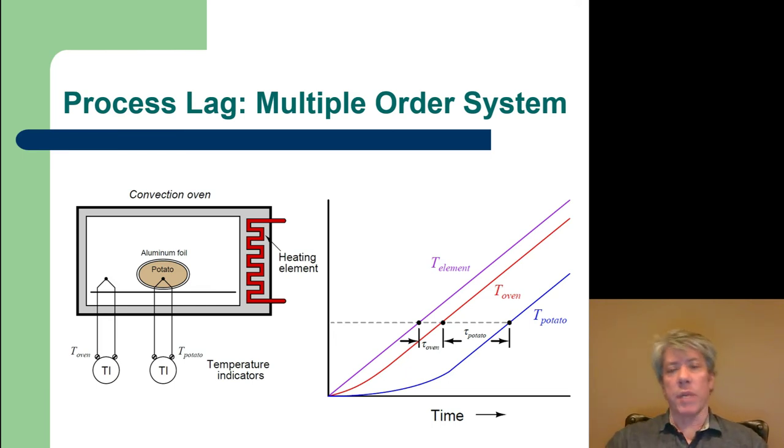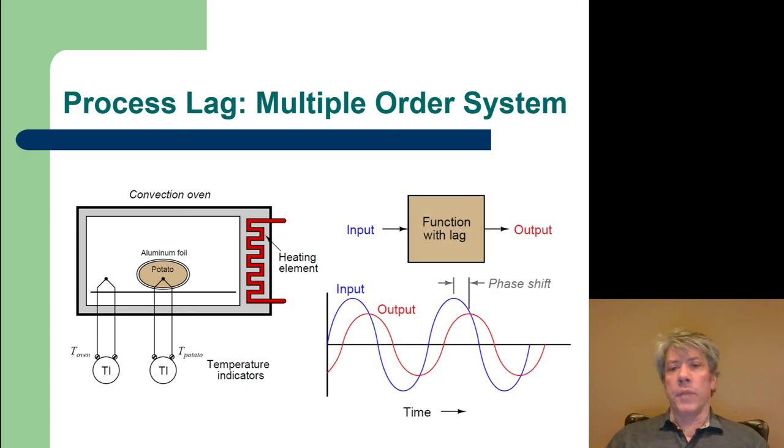If we were instead to make the temperature in the oven follow a sinusoidal shape, what we would notice is that the temperature inside of the potato follows that sinusoidal shape, but it's delayed. There's some lag. There's some what's called phase shift that makes the response not follow the input exactly. There's some delay.